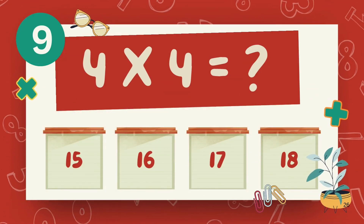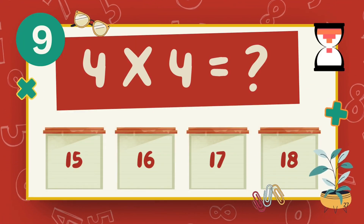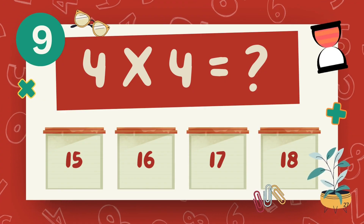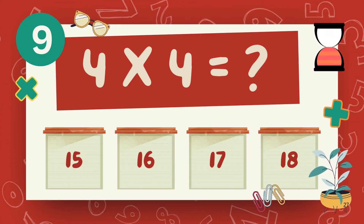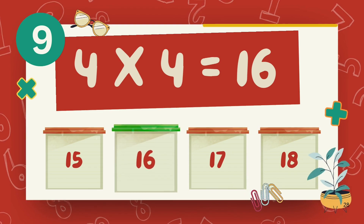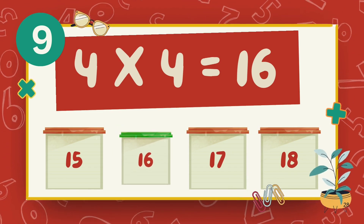What is 4 times 4? What is 6 times 4? The answer is 16.